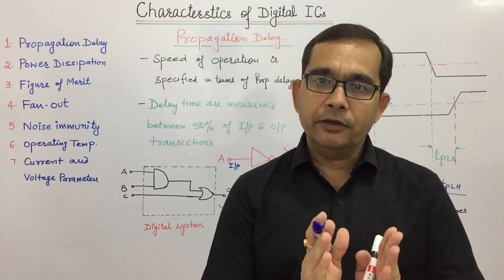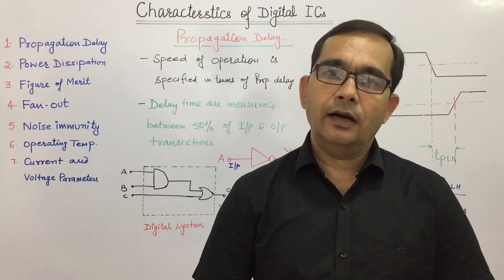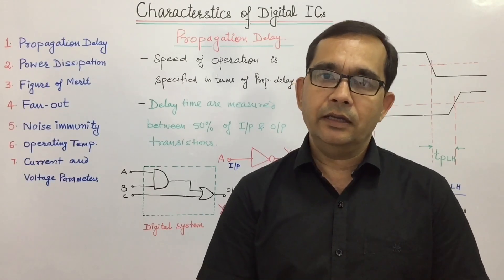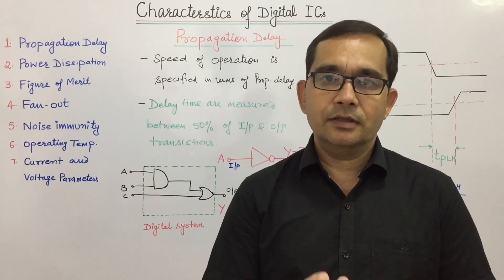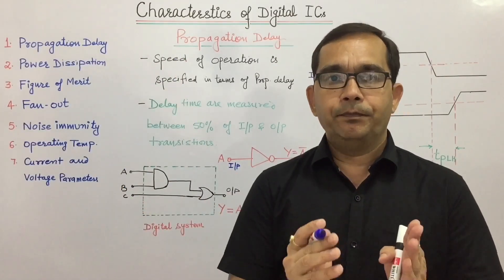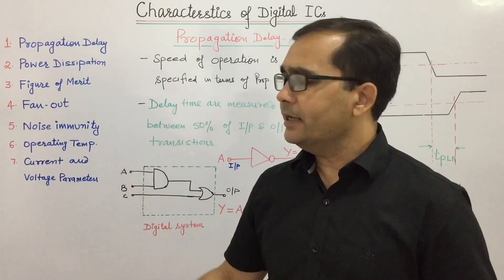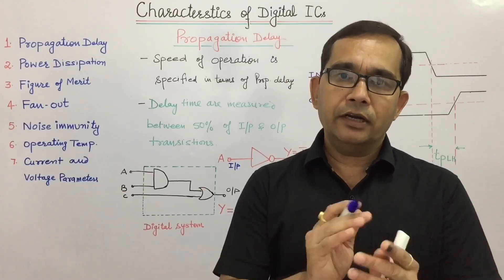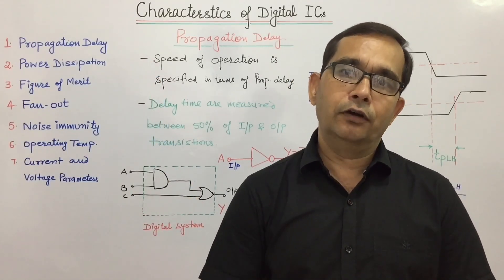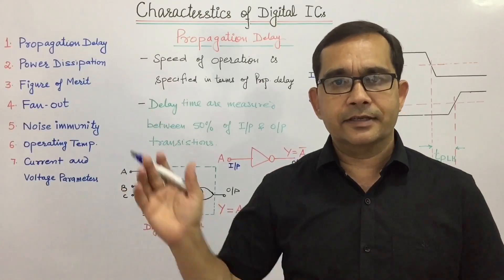It is necessary to be familiar with the behavior and characteristics of these ICs. The characteristics of IC logic families are compared usually by analyzing the circuit of the basic gate in each logic family. The most important parameters used to evaluate and compare these logic families are: propagation delay, power dissipation, figure of merit, fan out, noise immunity, operating temperature, and current and voltage parameters. In this presentation, we will learn about all these characteristics and parameters.